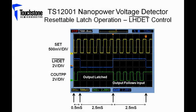Here we have a scope capture that includes a switching input to the set pin to the LH detect pin and the resulting output at CLPP, which is the push-pull output. When LH detect is high from 0 ms to 0.5 ms and from 3 ms to 5.5 ms, the comparator is transparent and the output follows the input.